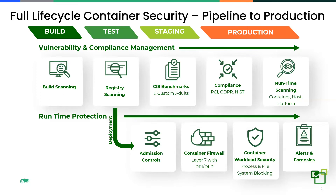Once you are in production, this is where the traditional security controls, as well as the new zero-trust security controls, need to be implemented through a layer 7 container firewall specifically designed for Kubernetes in a containerized environment. This firewall can inspect all the network traffic — whether it is east-west, pod-to-pod, ingress or egress — to look for any segmentation violations or network attacks.